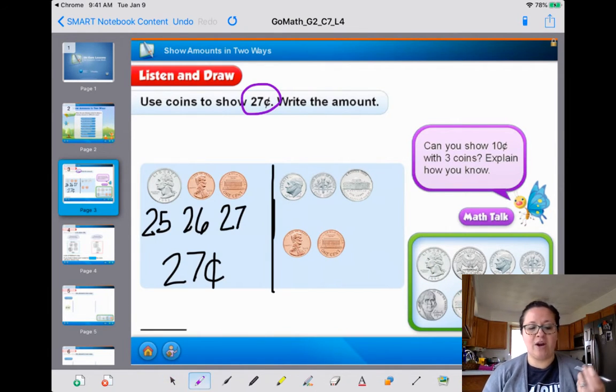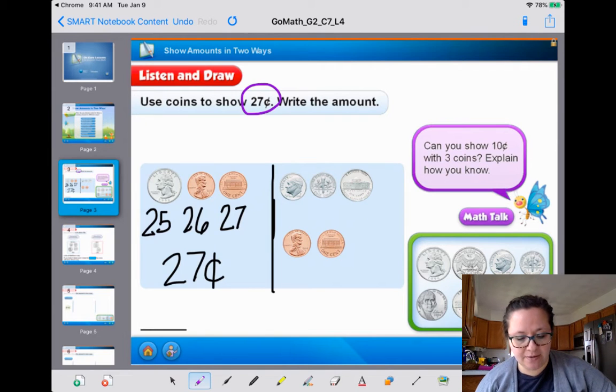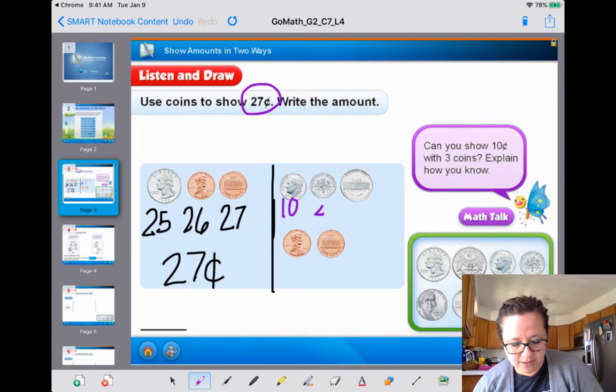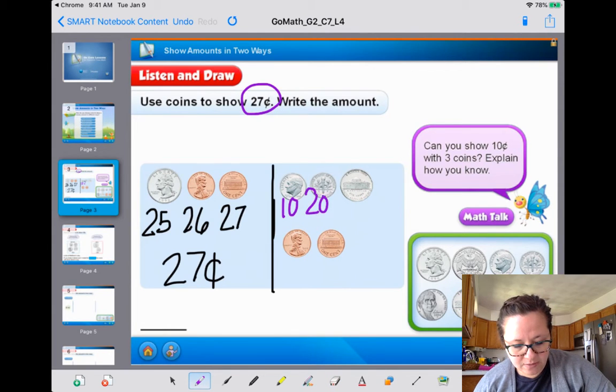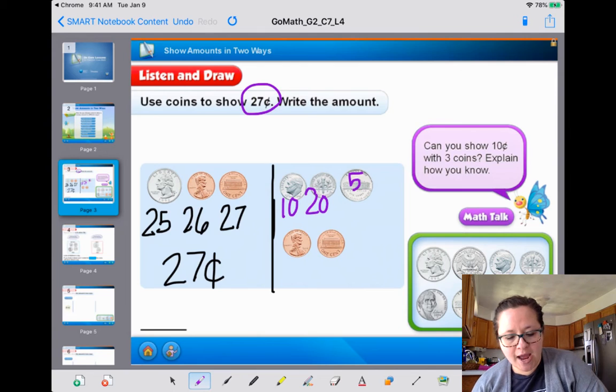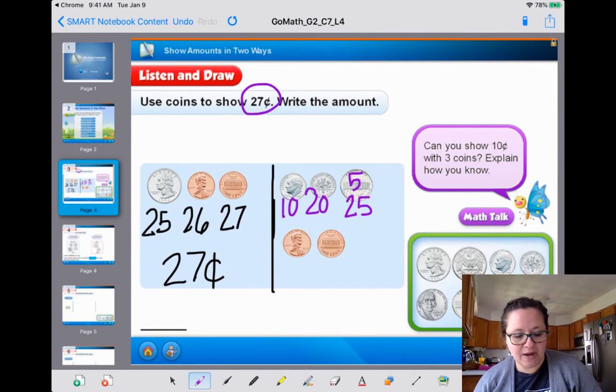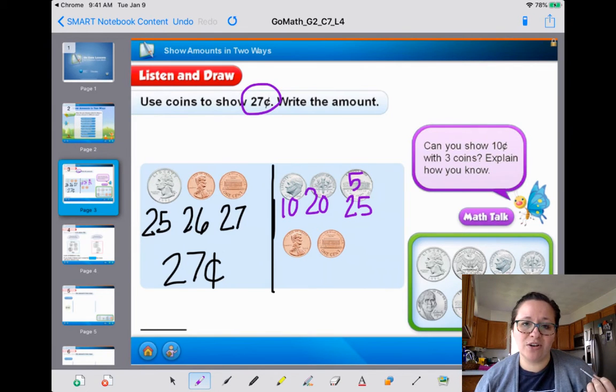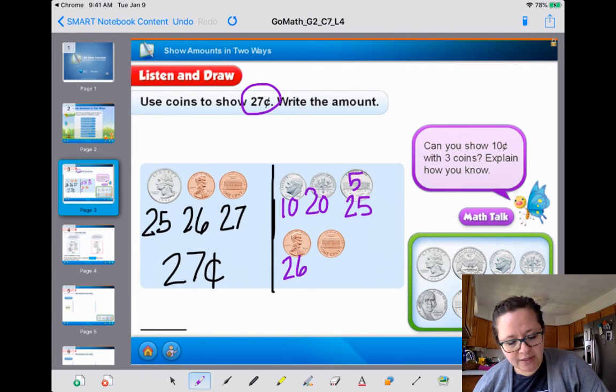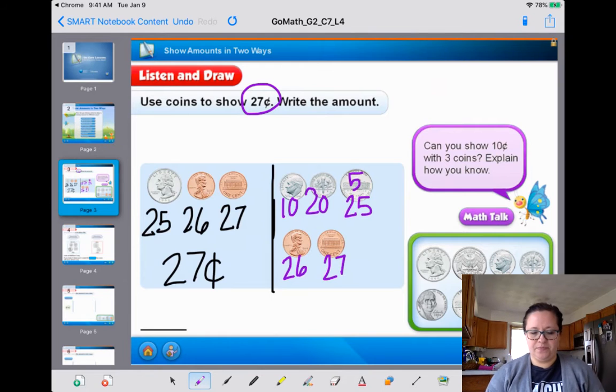So now let me double check to make sure I also have 27 cents by counting underneath my coins. So I know I have a dime. We just said that was 10. So we got 10. This is 20. Now we have a nickel, which is worth 5. 20 plus 5 makes 25. Now we have those two pennies underneath and we have to switch over my thinking and start counting by ones. So 25, counting by ones makes 26, 27.